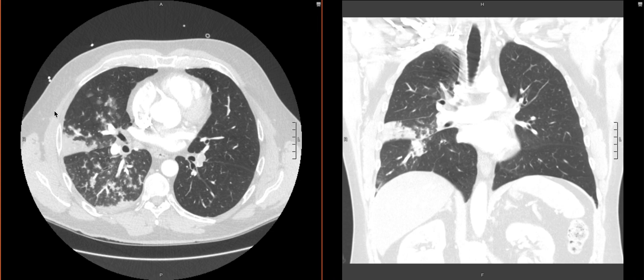In the setting of this patient who does have pulmonary emboli, this is very characteristic of a pulmonary infarct. When looking for the sequelae and consequences of pulmonary emboli — in addition to looking for elevated right heart pressures, which has an impact on clinical management — it is also very useful to interpret these findings appropriately, including wedge-shaped peripheral consolidations in your differential as potential pulmonary infarcts.